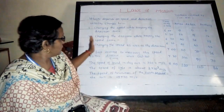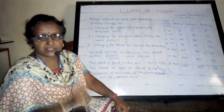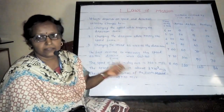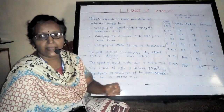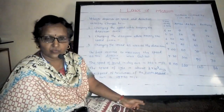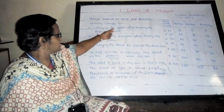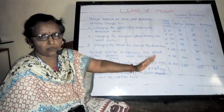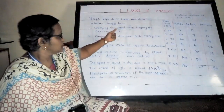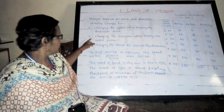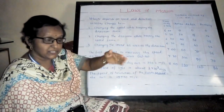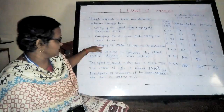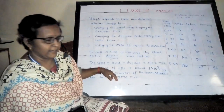Write this in your notebook: velocity changes when you change the speed, when you change the direction, or when you change both speed and direction. Velocity changes by changing the speed while keeping the direction the same. It also changes by changing the direction while keeping the speed the same, and also by changing both speed and direction.